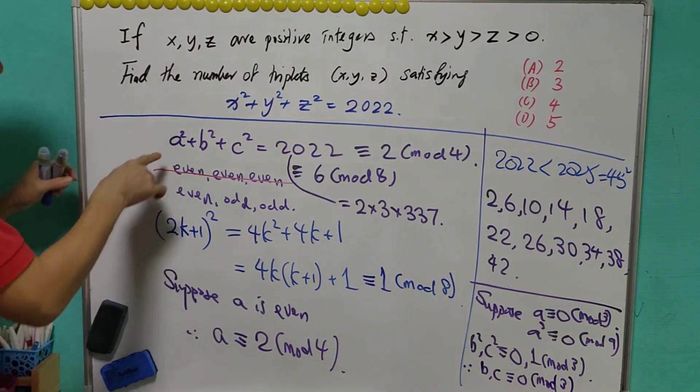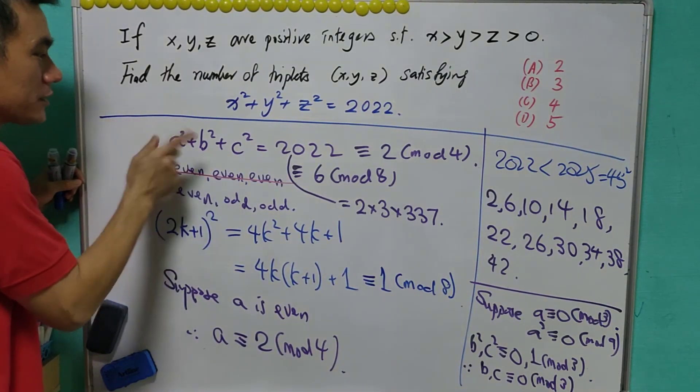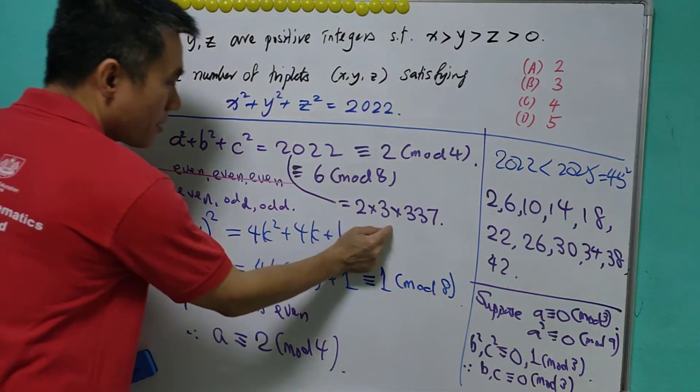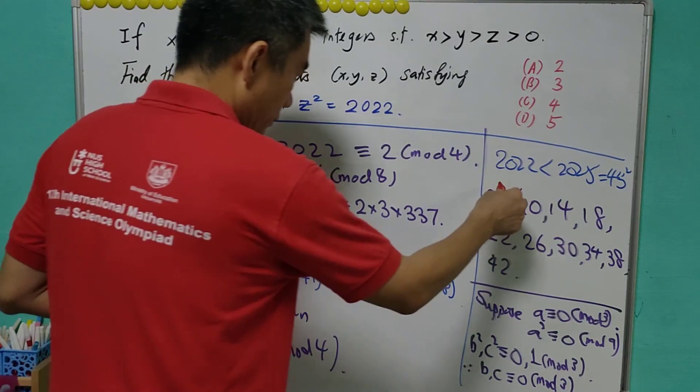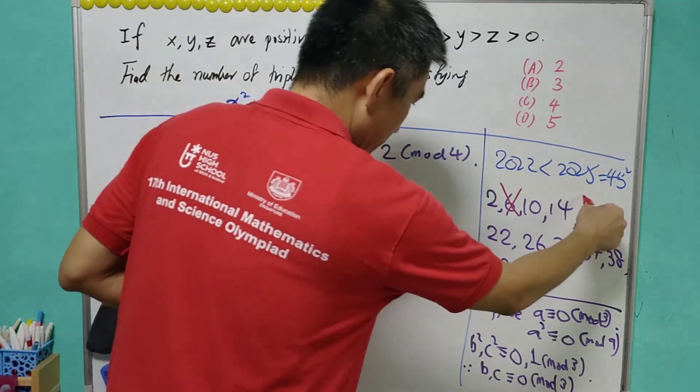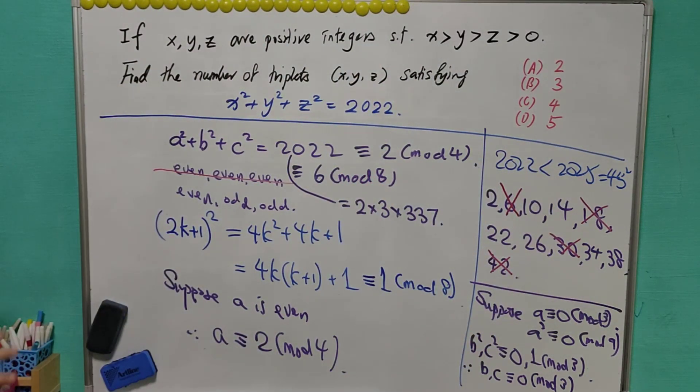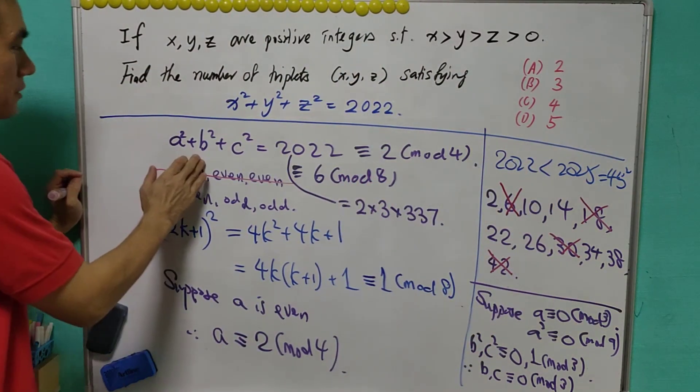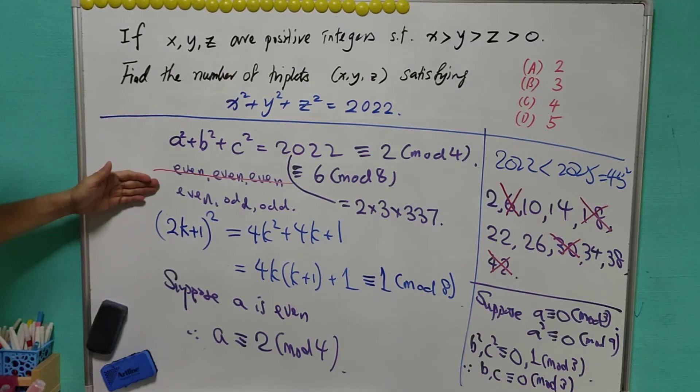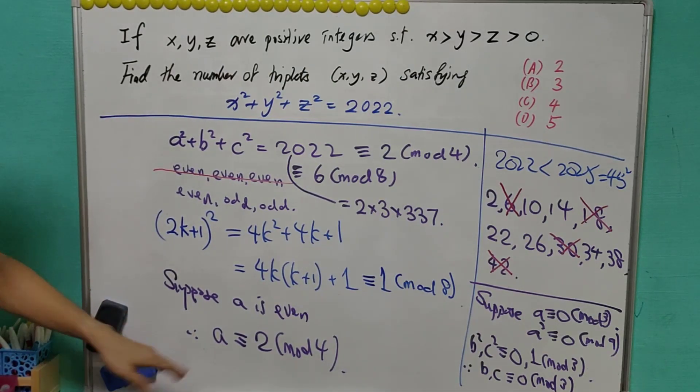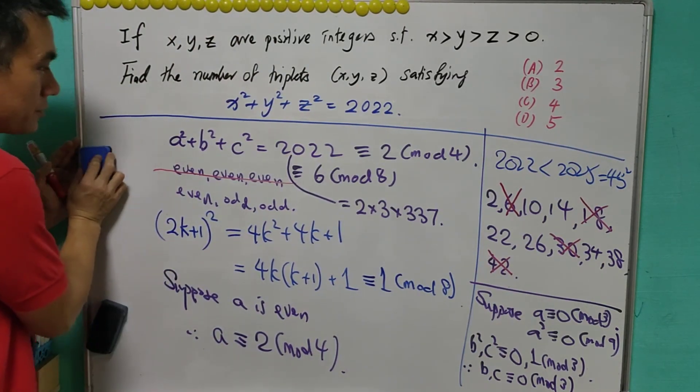If that is the case, a is a multiple of 3, b is a multiple of 3, c is a multiple of 3. The sum of the square must be a multiple of 9. But this is not a multiple of 9. Therefore, it is a contradiction. So with this, we can eliminate the multiple of 3 from here. Now this is what we have so far. If a square plus b square plus c square equals 2022, then a, b, c must be even odd-odd. Suppose a is an even number. These are the possible values of a.